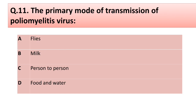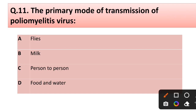Question number eleven: the primary mode of transmission of poliovirus — options: (a) flies, (b) milk, (c) person to person, (d) food and water. Correct answer is option D: food and water.